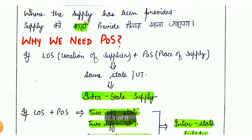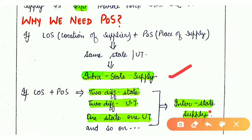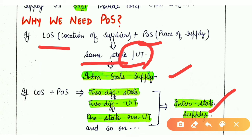We need Place of Supply under GST so that we can determine the nature of supply. Nature of supply is basically of two types: interstate and intrastate. To determine nature of supply, we use LOS (Location of Supplier) and POS (Place of Supply) — these two things help us determine the nature of supply.